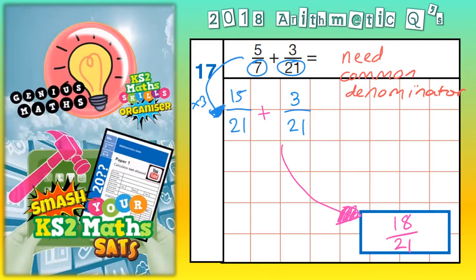Now you could go a stage further and realize that both of these are in the 3 times table. So if you simplify these, 18 divided by 3 is 6 and 21 divided by 3 is 7, so that's 6/7. But you don't actually need to simplify that in the SATs. That's something you would expect to be done in year 7. Either of those two answers are acceptable: 18/21 or 6/7.